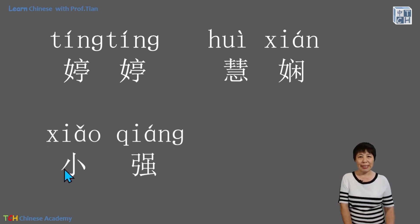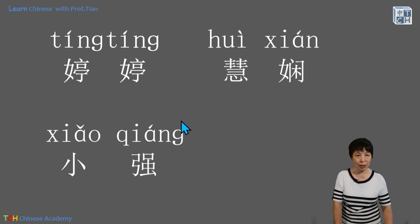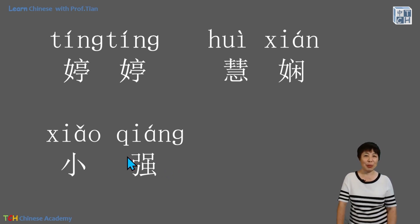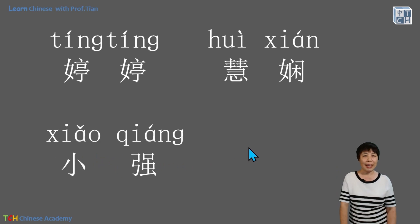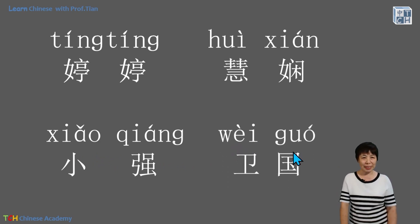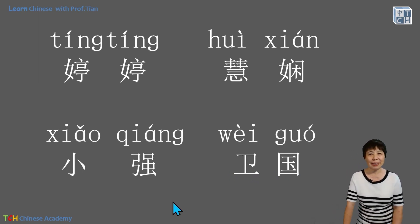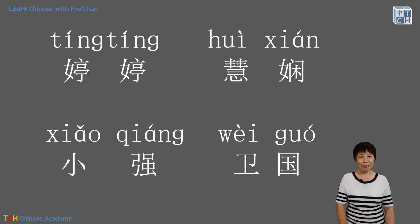For boys, 小强 — 强 means strong, strength. We like to use 小 to name our kids, like 李小龙, Bruce Lee, the little dragon. Maybe he was born in the year of the dragon. 小强 means really strong, and that's a boy's name. And another one: 为国 — 国 is the country, 为 is to protect. So it's a very patriotic name for boys. These are quite popular names, though of course names are so different — I just gave some examples.